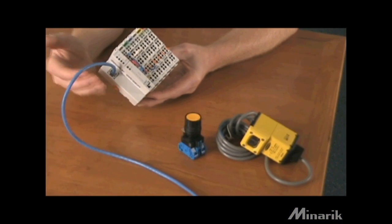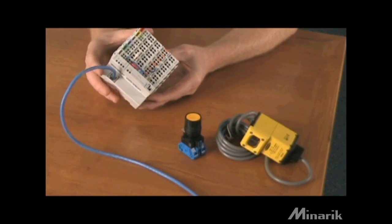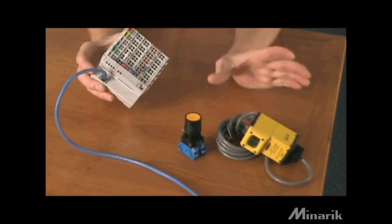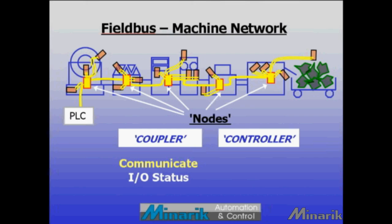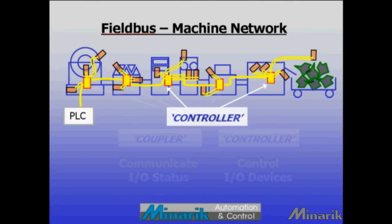Fieldbus couplers simply communicate the status of I/O points with the central PLC. Fieldbus controllers do this, and in addition can actually control the devices they're connected to — they program and act as a PLC, but are downstream of the central PLC on the network.